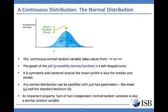Recall that in the last module we spoke about the sum of two independent random variables and how to deduce the mean and variance of the sum. In the same way, you can find the mean and variance of the sum of two independent normal random variables, and due to the above property, be rest assured that the new variable will also follow normal distribution.